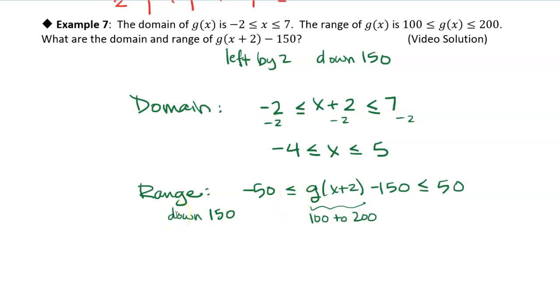So to summarize what we just did, because this new function g of x plus 2 minus 150 is shifted to the left by 2 and down by 50, we took the domain and shifted it to the left by 2, and we shifted the range down by 150. So that's all I have for you, and I'll see you in class.